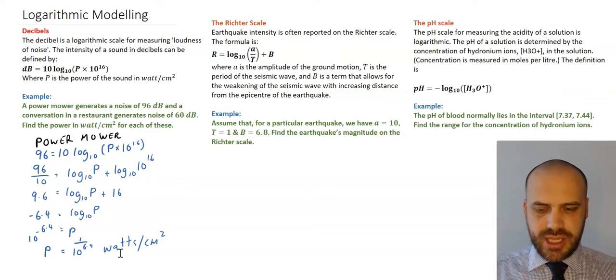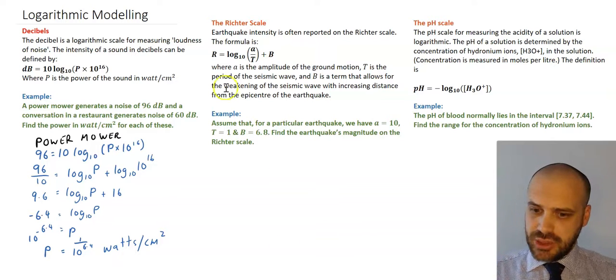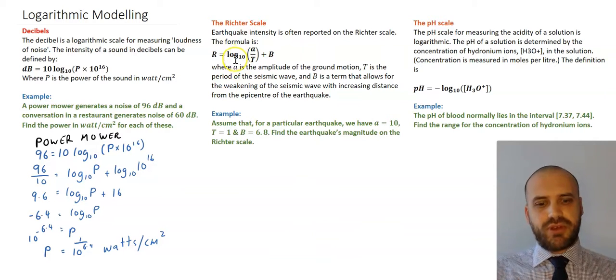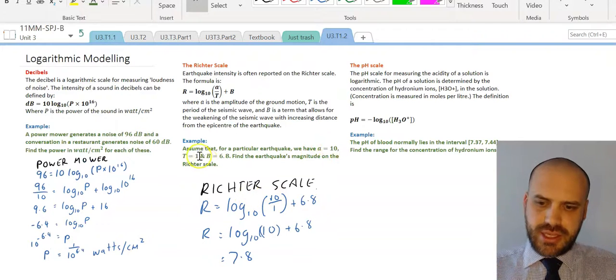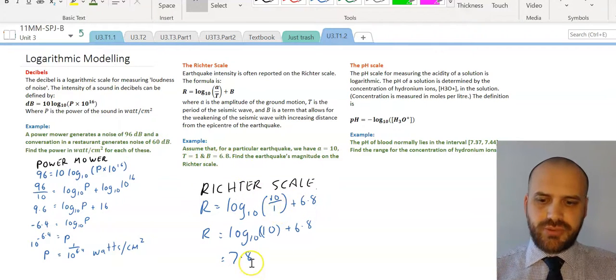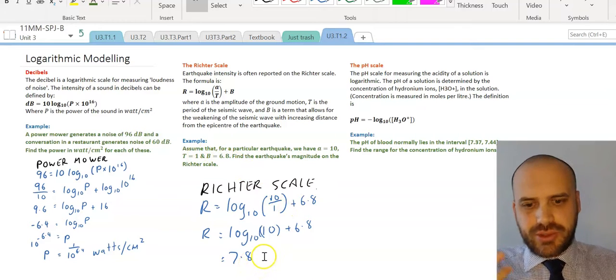All right, the Richter scale, same deal. You read the information, you look at your formula, and then you figure out what you're subbing in. So I've subbed some values in there. A is 10, T is 1, 6.8, and I've solved it, and I've got a 7.8 on the Richter scale.